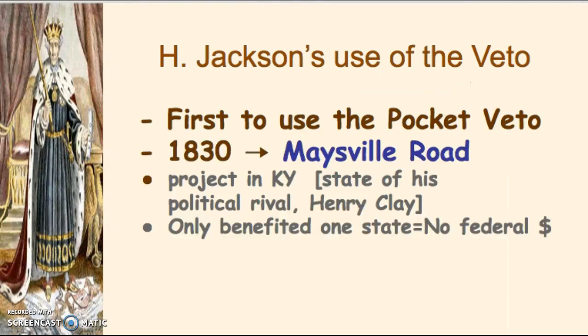You're going to see a definite expansion of executive power over the judicial branch here. Moving on to Jackson's use of the veto: Jackson was the first president to use the pocket veto, where legislation hits his desk but he doesn't sign it. One veto you need to know about is the Maysville Road veto in 1830.